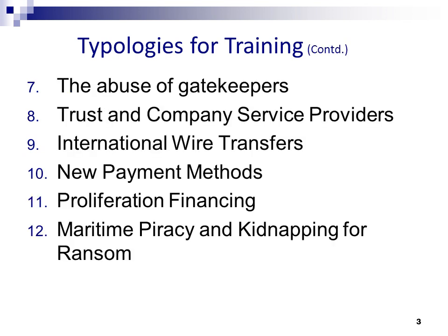Moving on to the seventh typology, which is the abuse of gatekeepers. Gatekeepers — which are lawyers, notaries, accountants, trust and company service providers and real estate agents — are a common element in complex laundering schemes. Lawyers are key in corruption schemes. The methods by which legal professionals are exploited include misuse of client accounts, purchase of real property, creation of trusts and companies, management of trusts and companies, managing client affairs and making introductions, undertaking certain litigation, and setting up and managing charities. Regulation of gatekeepers without effective supervision may not be sufficient to mitigate risk.